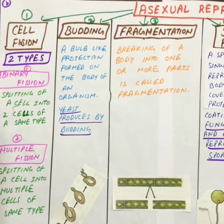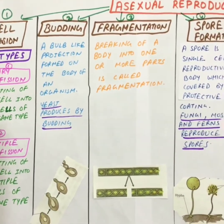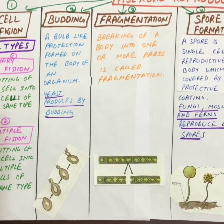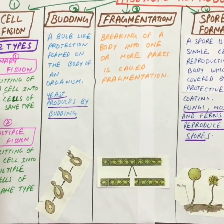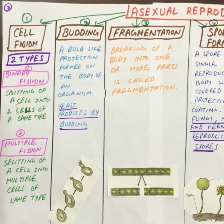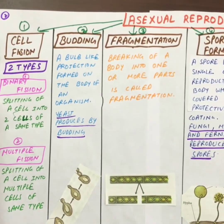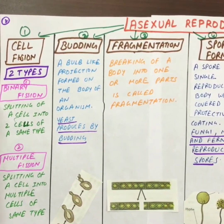The second type is budding. A bulb-like projection is formed on the body of an organism. For example, yeast reproduces by budding.